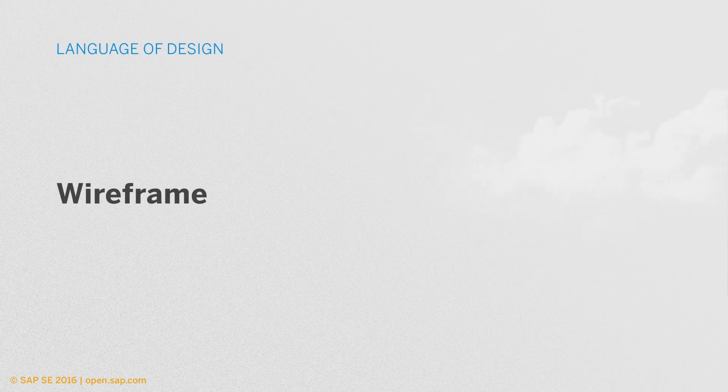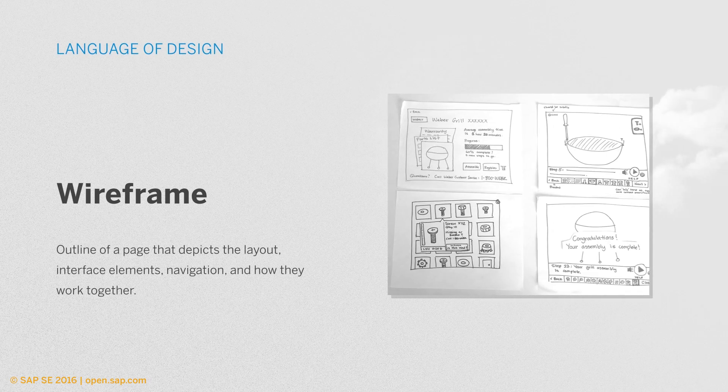In the production design phase, we talk about interaction design, visual design, and user interaction gets developed — data and functional design happens. Let's talk about wireframes some more. Wireframes outline what is on the page. They depict the layout, the interface elements, the navigation, and how they all work together.